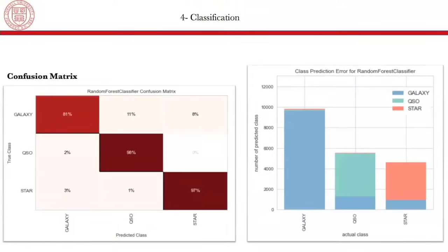And here's the confusion matrix. In this case, the galaxies have been predicted with an accuracy of 81%. The quasars have been predicted with an accuracy of 98%. And stars have been predicted with an accuracy of 97%.